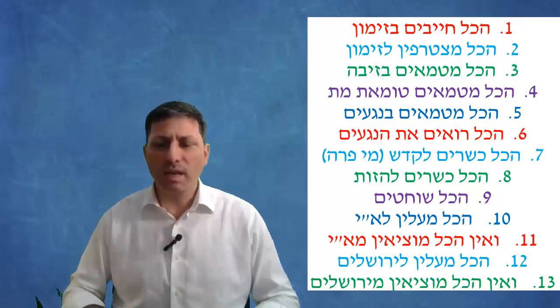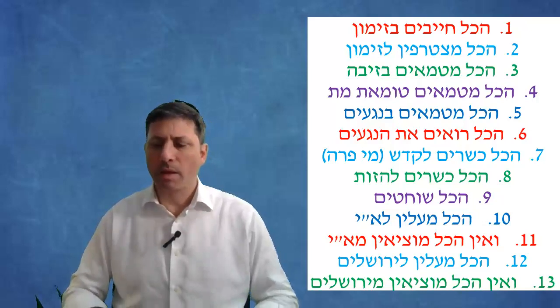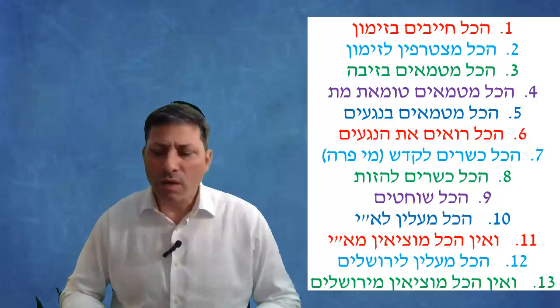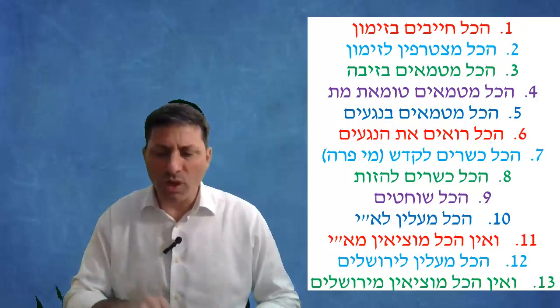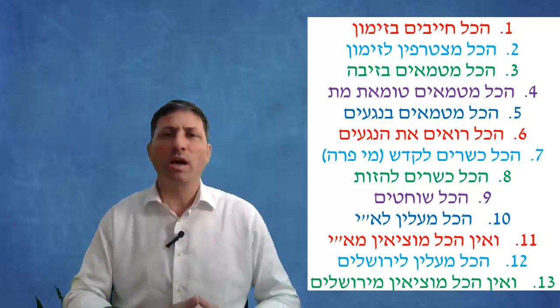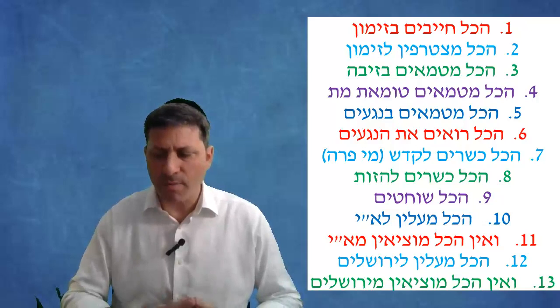Para aduma - it also says the word hakol, what does it come to include? Comes to include that according to B'Yehuda even a minor could mix the ashes of para aduma, and according to chachamim even a woman could mix it. It says by para aduma that everybody could do the hazah, the sprinkling of the ashes of para aduma on someone who's tamei meis.